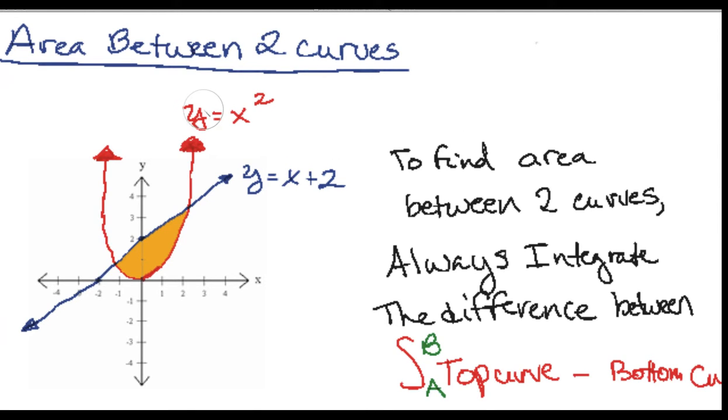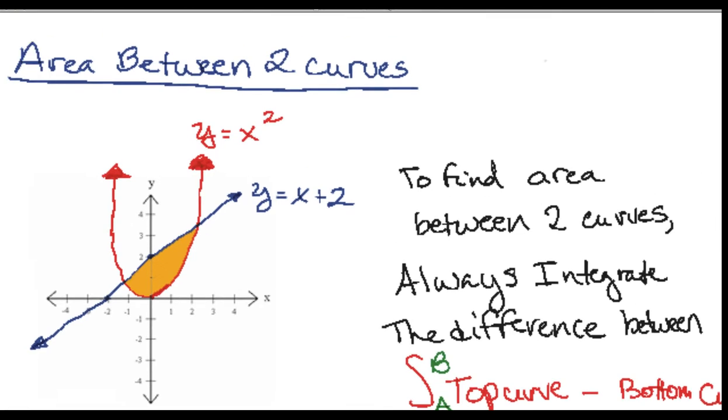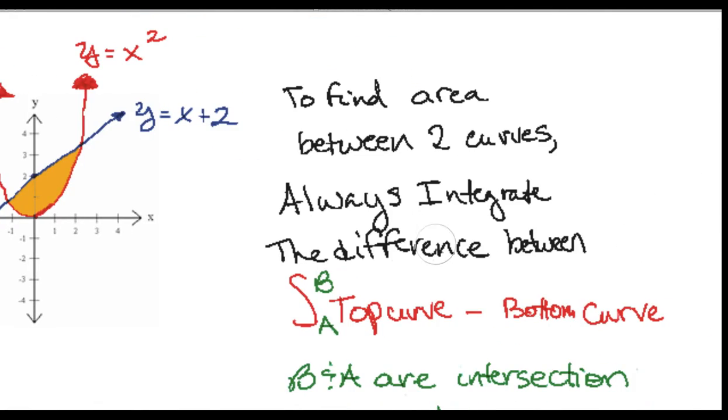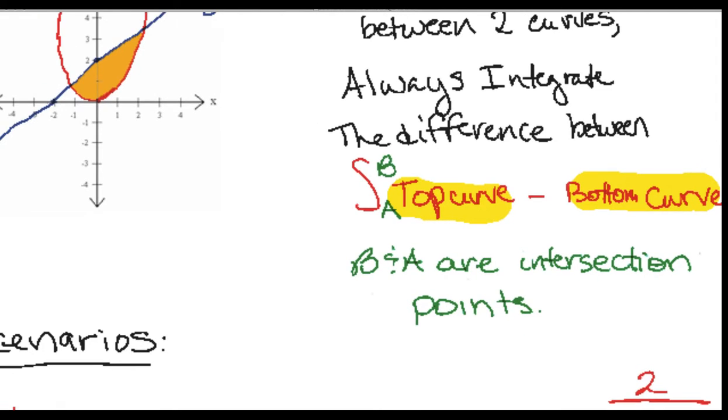So the concept basically is you're going to be given either two functions or one function in the x-axis, and you're going to need to find the area in between the two functions. It's always going to be the top curve minus the bottom curve, and b and a are going to either be given bounds or the intersection points.